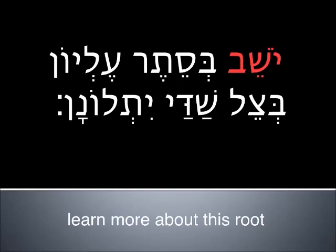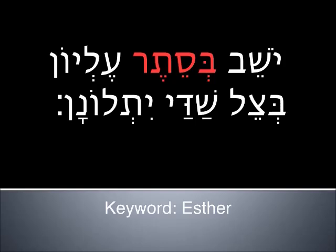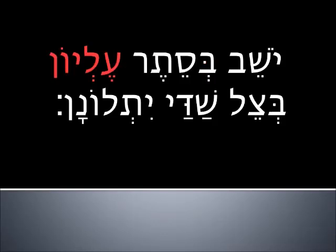The root yashav means to sit or dwell. It's here in the participle, in the present tense, and it's being used as a noun: the one who sits or the one who dwells. Bet is a preposition meaning in. The root satar means to hide or to be in secret, and your keyword for this is Esther. Esther's name is given as a Persian name resembling the pagan goddesses Ishtar or Astarte, but it has a meaning in Hebrew — aleph and then satar — so it can mean either 'I will hide' or 'I am hidden.'